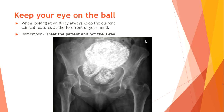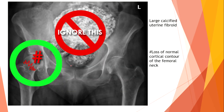Keeping your eye on the bone means thinking about the major complaints of the patient. Remember: you must treat the patient and not the x-ray. Here we see a large calcified uterine fibroid, but the key finding is a hip fracture — specifically, loss of normal cortical contour of the femoral neck.